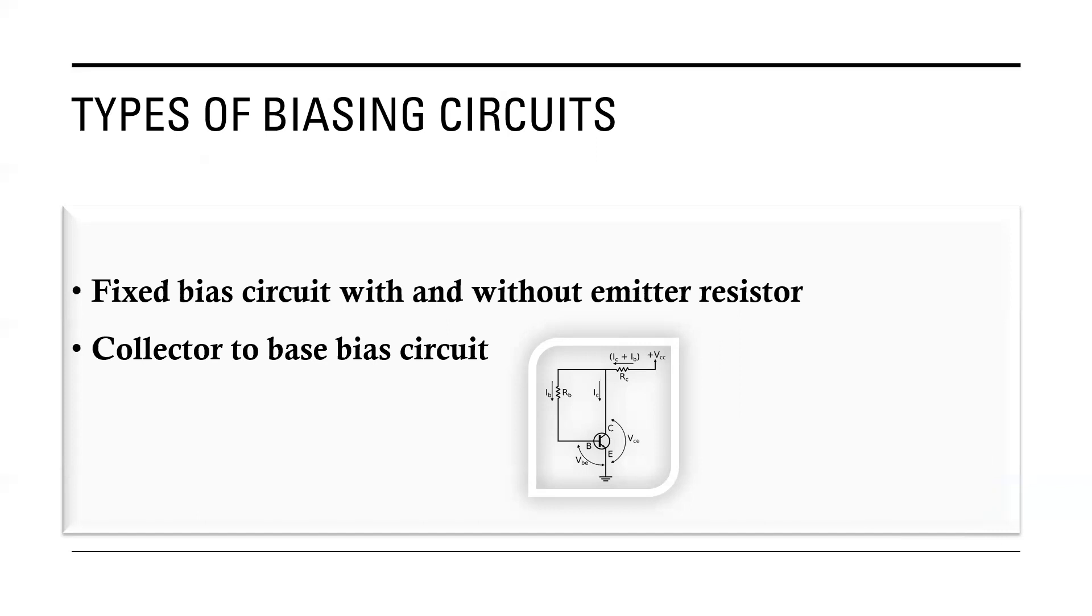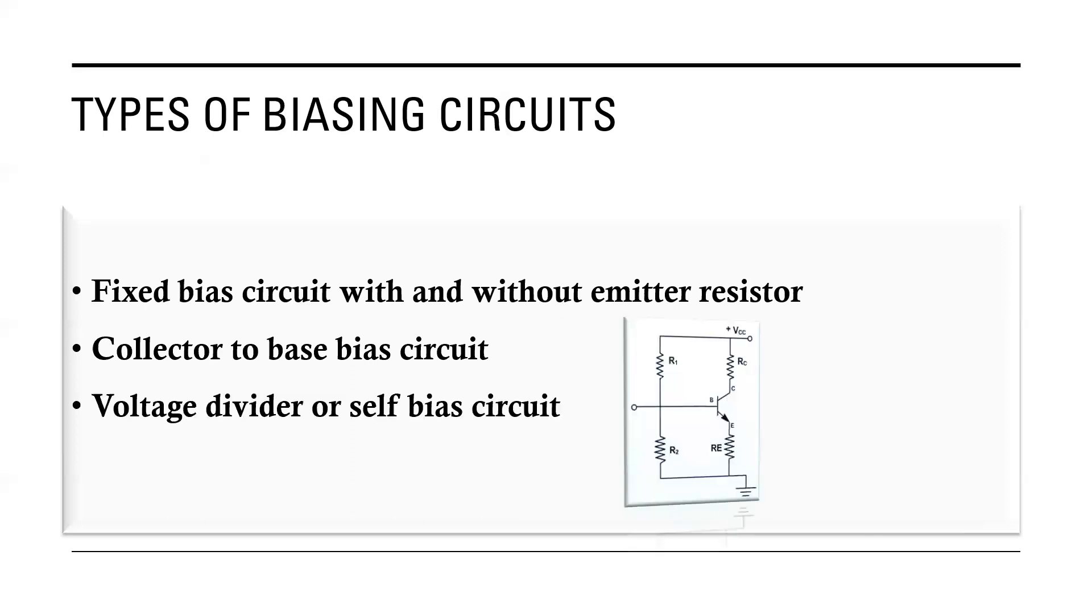Next thing: collector to base bias circuit. Actually it is an improvement over fixed bias methods. In this, the biasing resistor is connected between collector and base of the transistor to provide a particular feedback path.